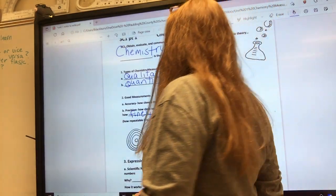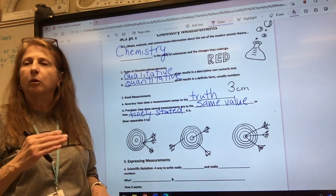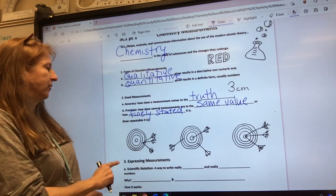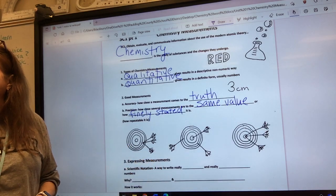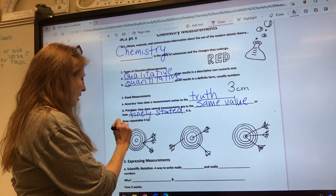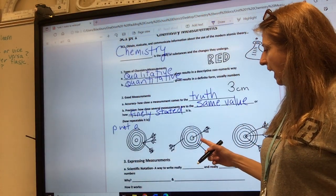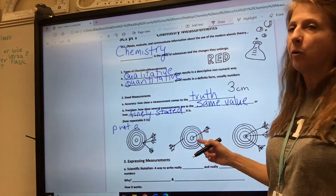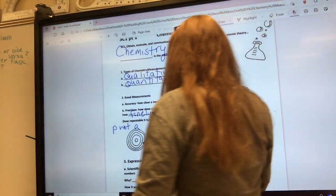Things are precise if they're repeatable. Let's look at our bullseye. Is bullseye number one accurate, precise, neither or both? Neither. How about that one? I'd say neither. Out of these three shots even though that one made it, we don't know that it made it, so I'd say neither.